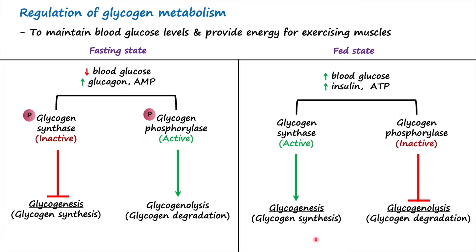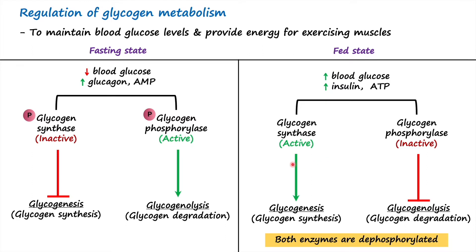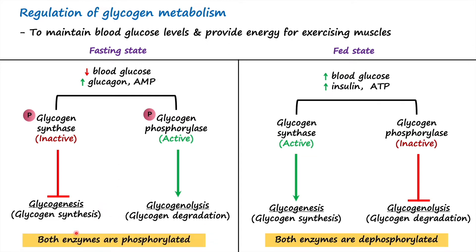To summarize: glycogenesis is favored during the fed state when blood glucose levels are high, resulting in increased insulin and ATP levels — both enzymes are dephosphorylated, glycogen synthase is active and glycogen phosphorylase is inactive. Glycogenolysis is favored during fasting state when blood glucose levels are low, resulting in increased glucagon and AMP levels — both enzymes are phosphorylated, glycogen synthase is inactive and glycogen phosphorylase is active.